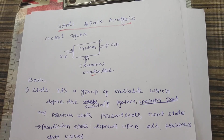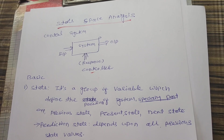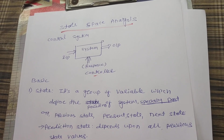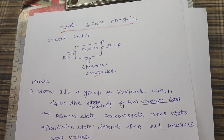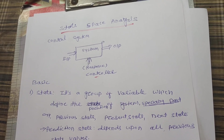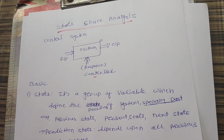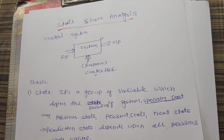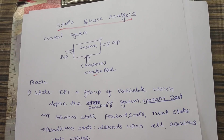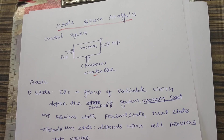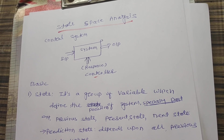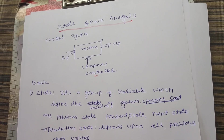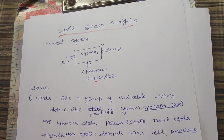Hello friends. In this class we will study state space analysis, which is a part of our Unit 5. We are familiar with control systems — a system has inputs and outputs, and the output is controlled by the input. Generally, transfer functions are used to define the stability of systems. But if systems have multiple inputs and multiple outputs, it is very difficult to apply the transfer function. That is why we need to study state space analysis.